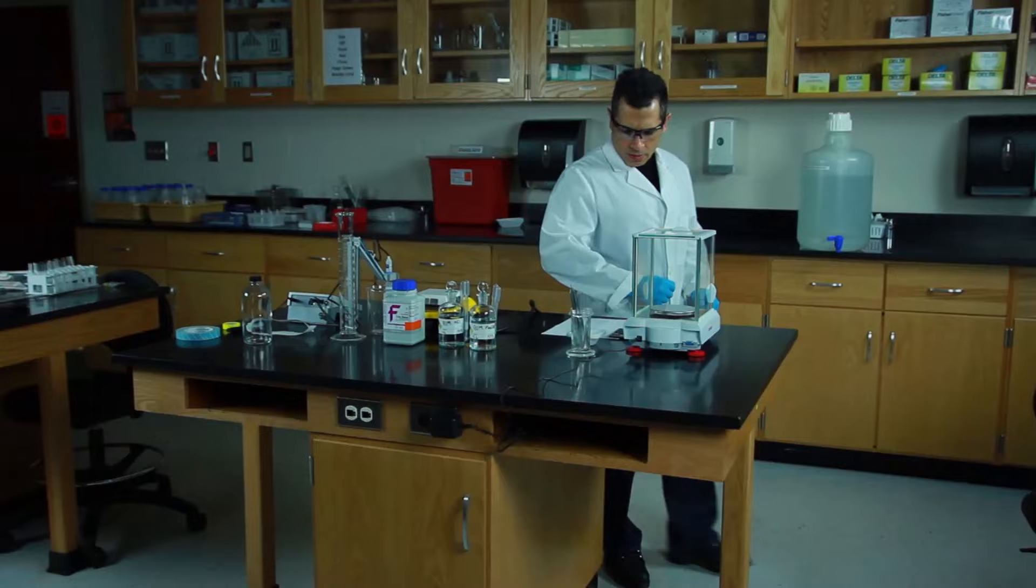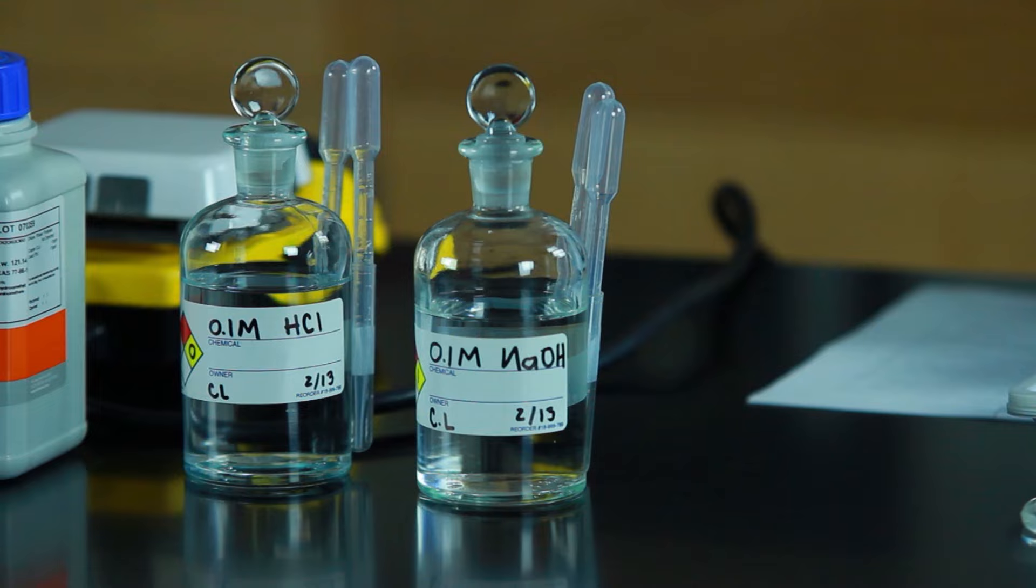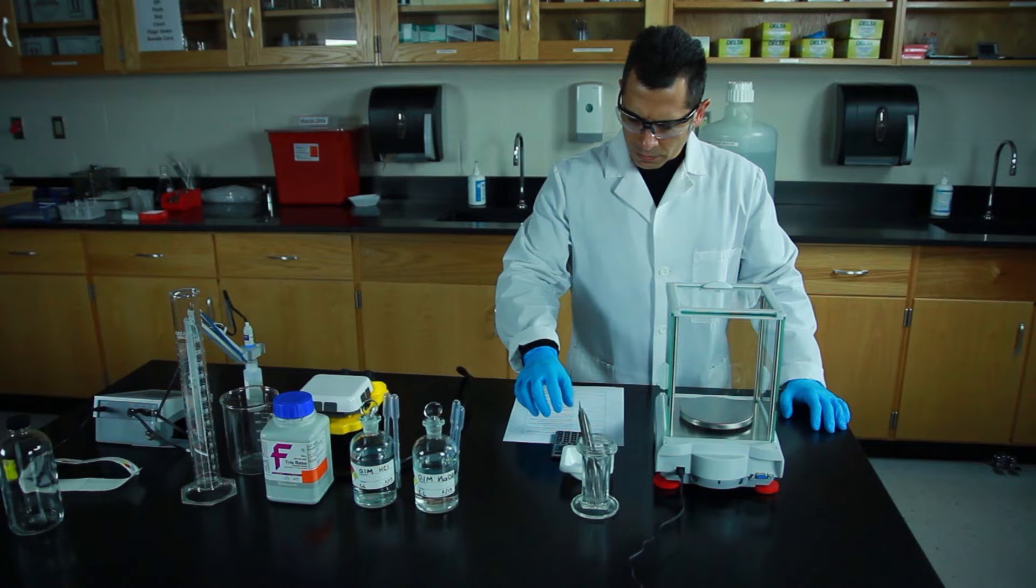Tris is a buffer that's used to maintain a stable pH when working with solutions in the lab. In this exercise we'll demonstrate the steps for preparing 250 milliliters of a 0.5 molar Tris buffer.